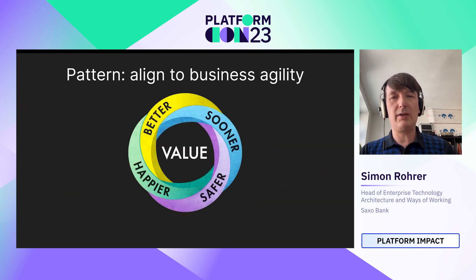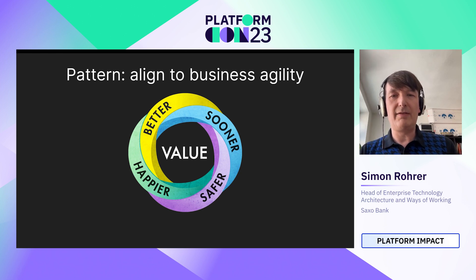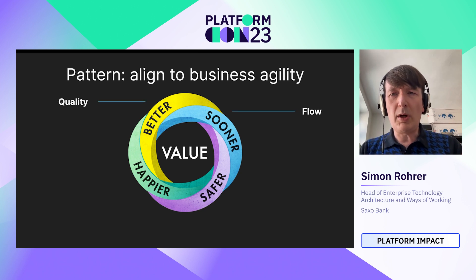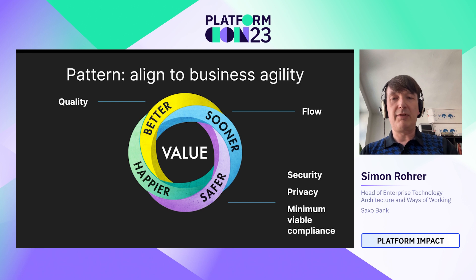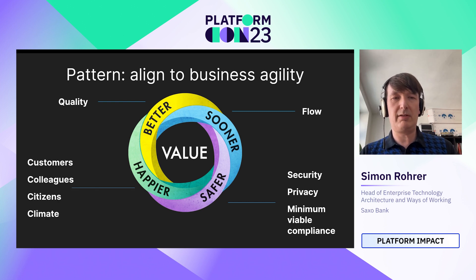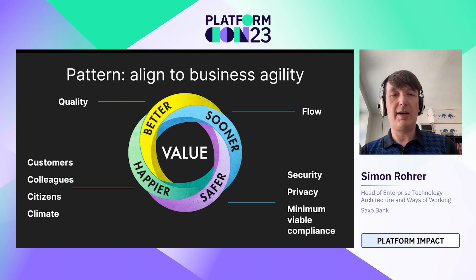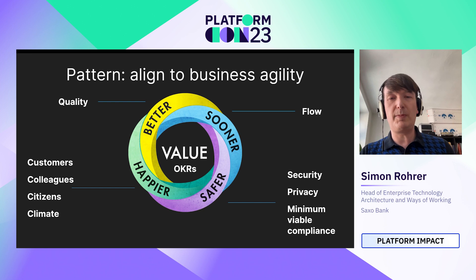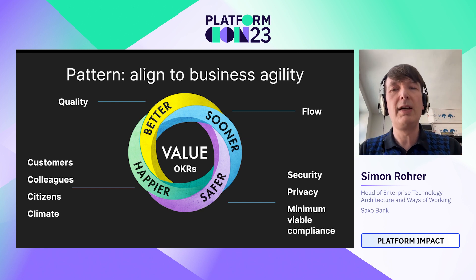What we say in the book Sooner, Safer, Happier is that the optimized outcomes are better value, sooner, safer, happier. Better means quality; sooner means flow, time to value or time to learning. Safer is agile not fragile — security, privacy, minimum viable compliance. And happier is not just happier customers — they're awesome — but happy colleagues too, happier citizens and happier climate, not happier at any cost. And finally, value is the thing that makes you special. We would recommend measuring that in particular in terms of objectives and key results.